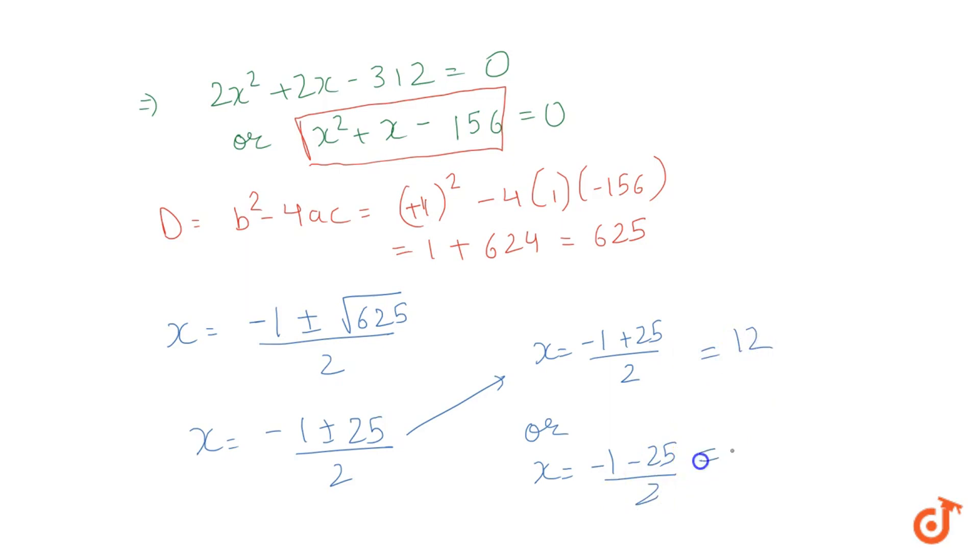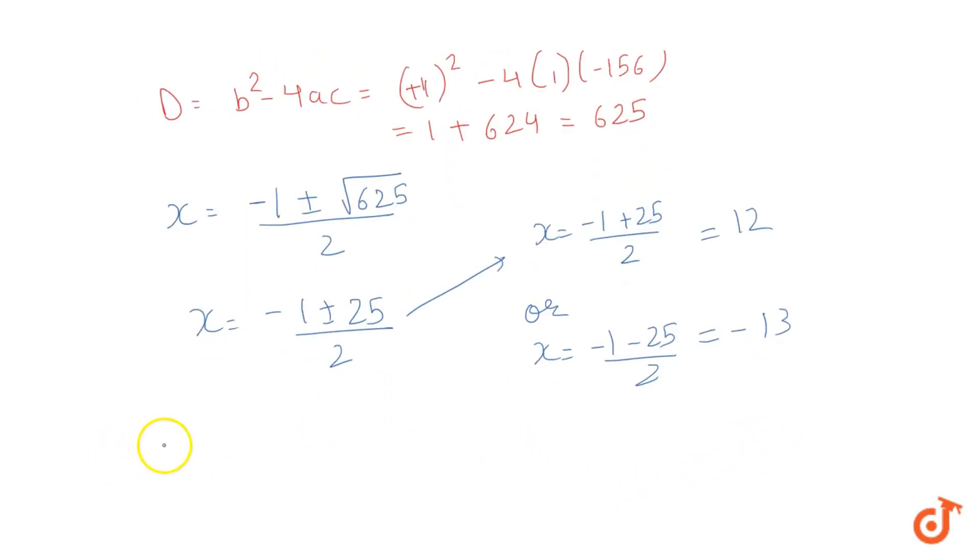This will give me 12, this will give me -30. Now so we basically got x = 12 and -30.